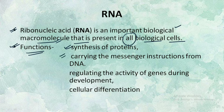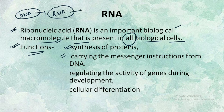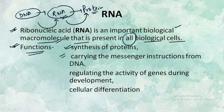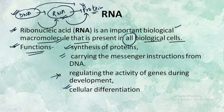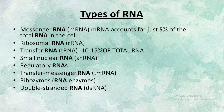RNA helps to carry the message instructions from the DNA. We have discussed about the central dogma, in which DNA gets converted into RNA, and RNA gets converted into protein. So RNA works as a messenger instructor, carrying information from the DNA to make proteins. Another important function is that it helps in regulating the activity of genes during development and also helps in cellular differentiation.